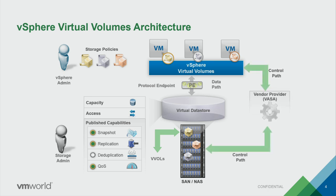Once we have created our policies and attached them to a virtual machine, the VMs are now stored directly on the array in a new fashion. This is what the VVol is in the Virtual Volumes aspect. Each VM can be broken down into a subset of components that are Virtual Volumes — we call them that because they can be handled discretely and intelligently on their own. At the end of the day, it's the primary object on the array that represents a set of objects making up a virtual machine, managed via policy.